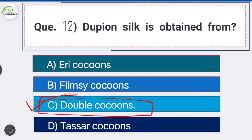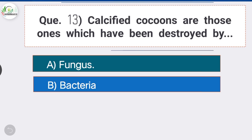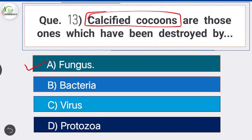Question thirteen: calcified cocoons are those which have been destroyed by — option A is the correct answer — fungus. Calcified cocoons are those which have been destroyed by fungus.